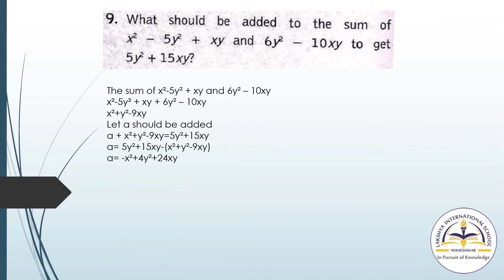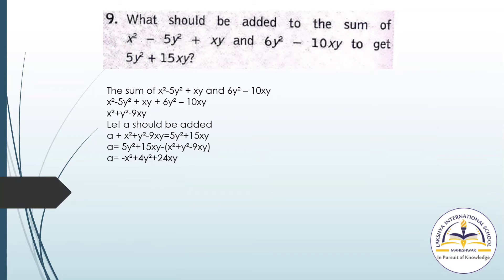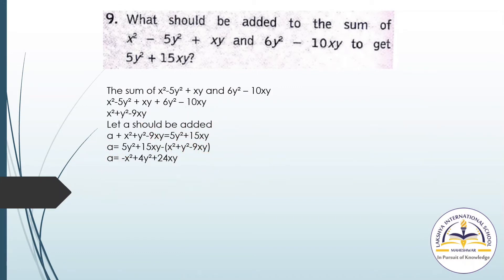Question 9: What should be added to the sum of x² minus 5y² plus xy and 6y² minus 10xy to get 5y² plus 9xy? First find the sum of the two given expressions, then consider the unknown term as a. Set a plus the sum equal to 5y² plus 15xy, transfer terms to the RHS, and find the answer.